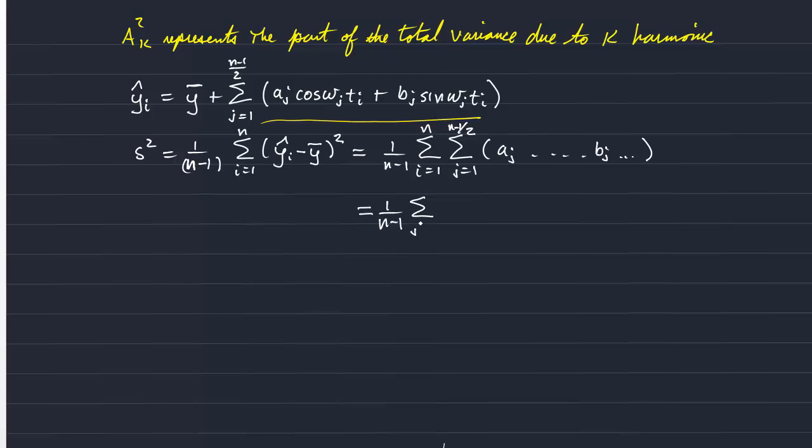And I can rearrange the order of the summation. So I'll put the sum over j on the outside. And this term is squared.